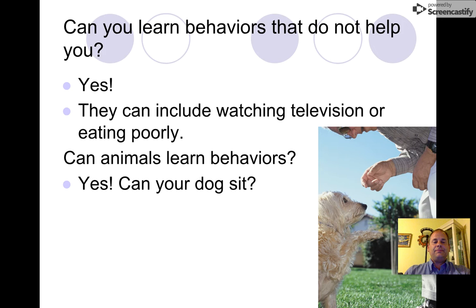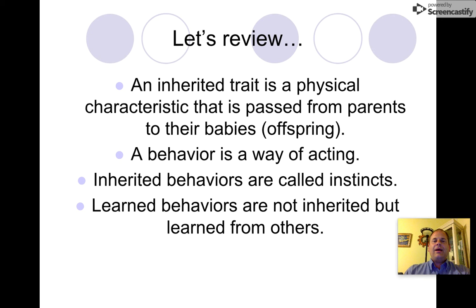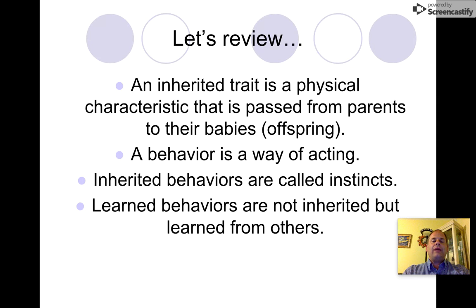Let's review. An inherited trait is a physical characteristic passed from parent to offspring that you cannot change about yourself — like brown hair or eye color. You can color your hair, but the natural hair that grows from the roots is an inherited trait. A behavior is a way of acting. We learn how to speak, walk, and behave. Learned behaviors are not inherited; they're learned from others, and you can change them. You cannot change an inherited trait.